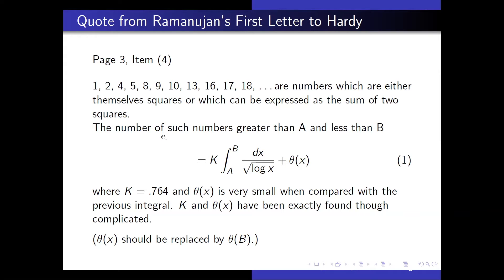Ramanujan says the number of such numbers greater than a and less than b is equal to this integral. K is 0.764, and theta of x is very small when compared with the previous integral. Note there is a slight error here — just a misprint. The theta of x should of course be theta of b.